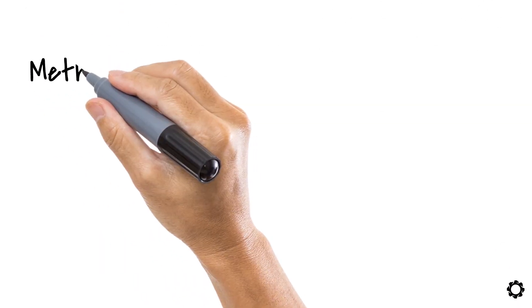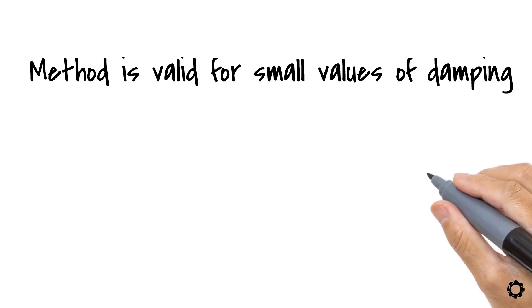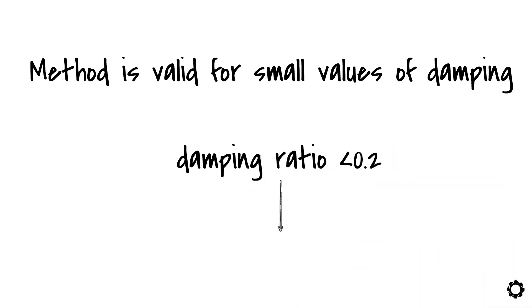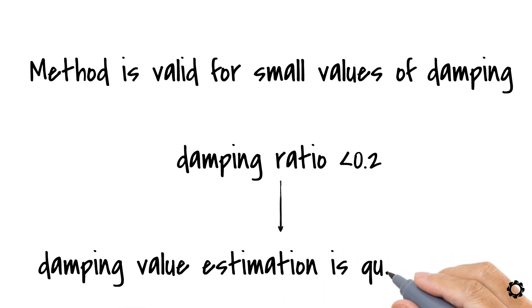It should be noted that this method is valid for small values of damping. For example, if the damping ratio is less than 0.2, the damping value estimated by this method is going to be quite accurate.